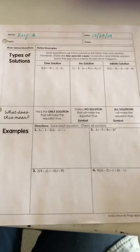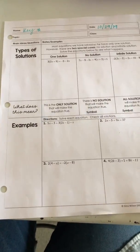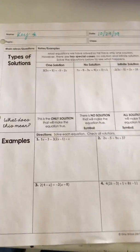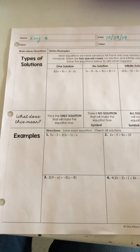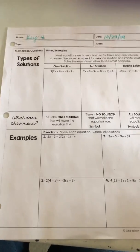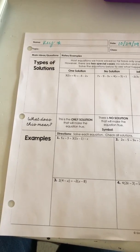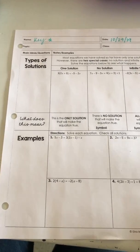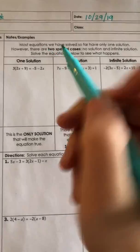We've spent a lot of time practicing solving multi-step equations including combining like terms and the distributive property. Now we're going to take that skill to the next level — we'll still solve multi-step equations, but then we're going to identify whether each equation has one solution, no solution, or infinite solutions. There are three options and we're going to explain exactly how we get those in this video lesson.